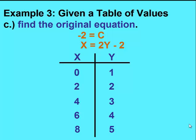Let's try one more point. We'll substitute 3 in for y. 2 times 3 is 6, minus 2 is 4 for x, which is correct. This is the original equation that produced this table of values.